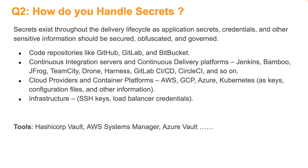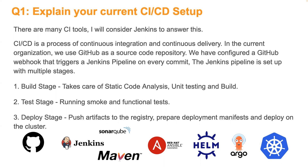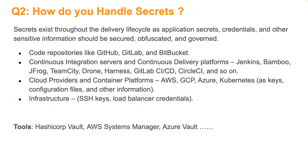The second question is: how do you handle secrets? This is a very important question. Most people are well-prepared for the CI/CD process question, but you also need to explain secret management. Secrets are an integral part of every application — SSH keys, API keys, Kubernetes login secrets — you deal with a lot of secrets in your CI/CD pipelines.